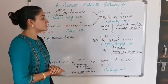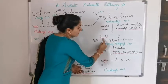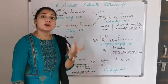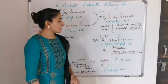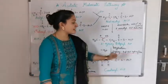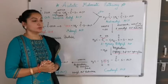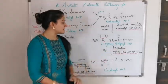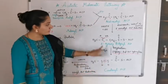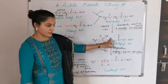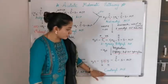3-Hydroxybutyryl ACP then undergoes dehydration — removal of a water molecule (H and OH) — in the presence of the enzyme 3-hydroxyacyl ACP dehydratase. Because of removal of one water molecule, 3-hydroxybutyryl ACP is converted into crotonyl ACP. A double bond is formed between the second and third carbon, which is known as crotonyl ACP.